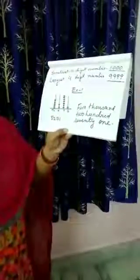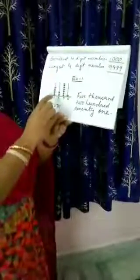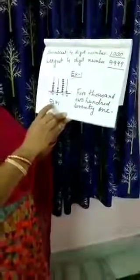Now check out Exercise 1. The heading reads: draw beads to represent the following numbers on the abacus and write their number names below. This is an abacus. First sum: 5271. 5 will be at the thousands place, 2 at the hundreds place, 7 at the tens place, and 1 at the ones place. So I will draw 5 beads at thousands, 2 beads at hundreds, 7 beads at tens, and 1 bead at ones. The number name is five thousand two hundred seventy-one.